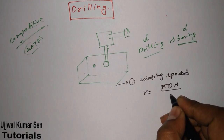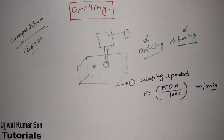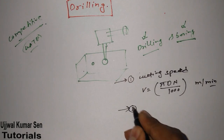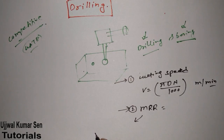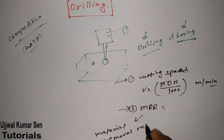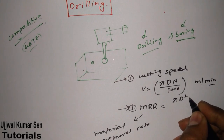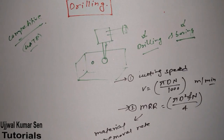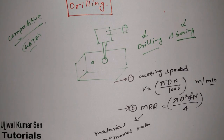The second formula is MRR — Material Removal Rate. Its formula is MRR = π d² f N / 4, where f is feed, N is revolution per minute, and d is the diameter of the hole.